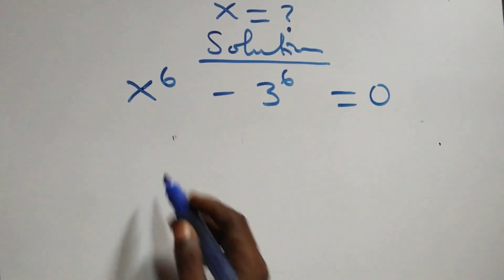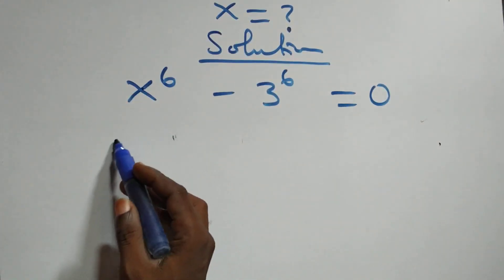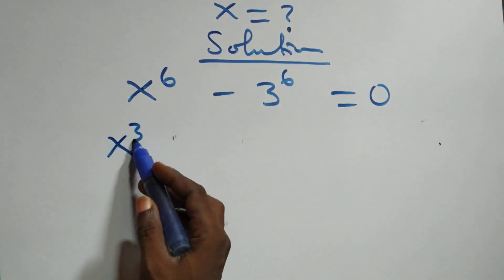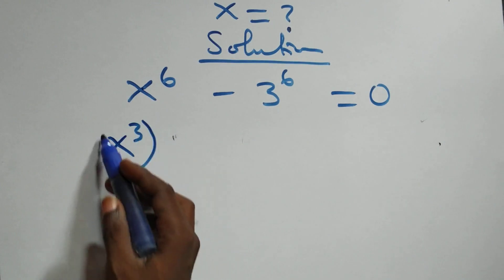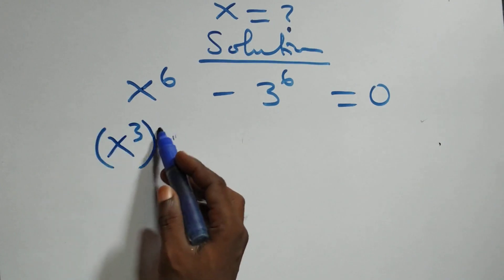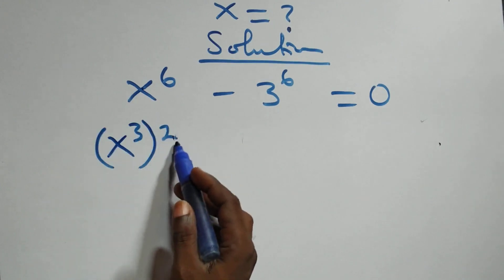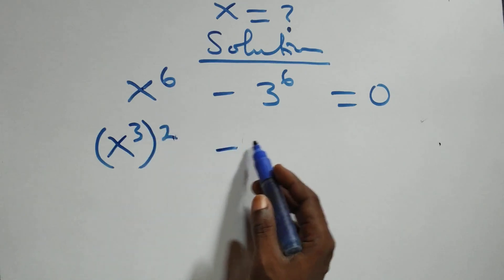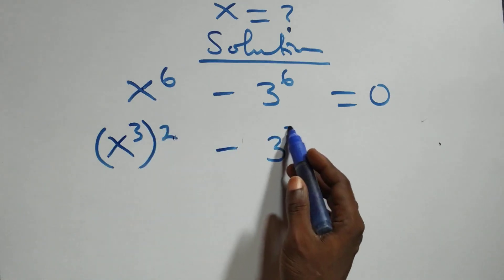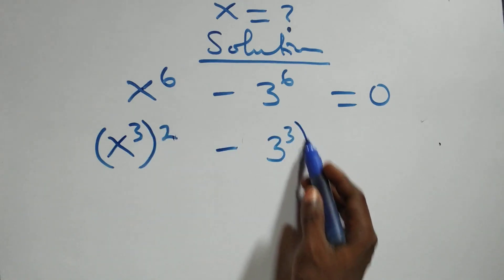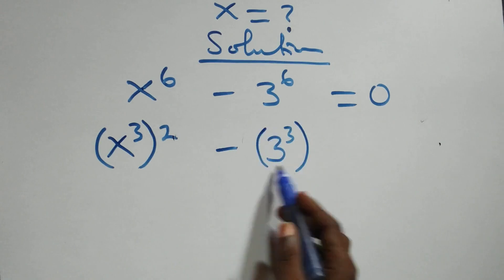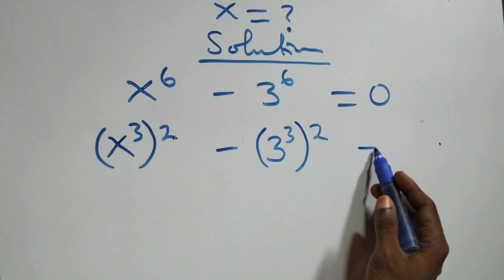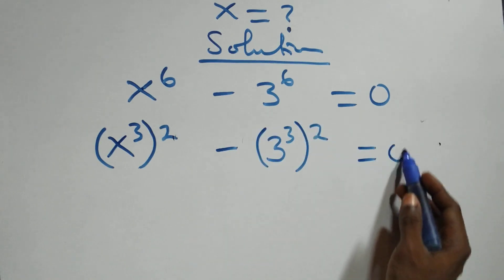Here we can write this as x raised to power 3, then raised to power 2 — since 2 times 3 gives us 6 — and minus 3 raised to power 3, then raised to power 2, then equals to 0.